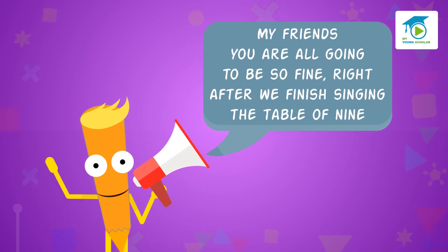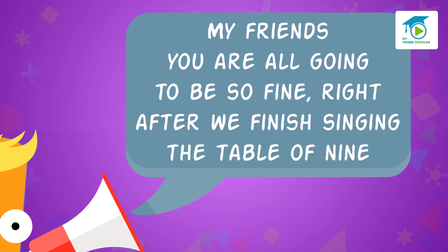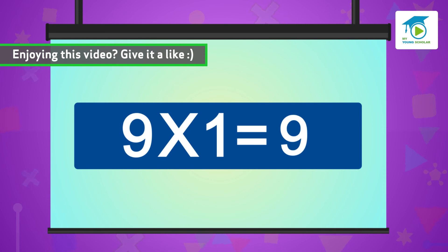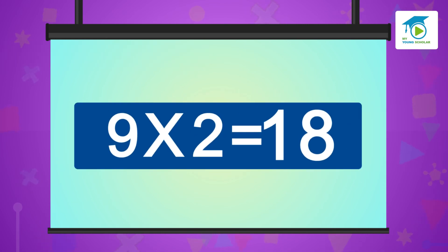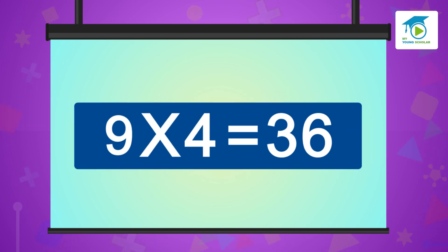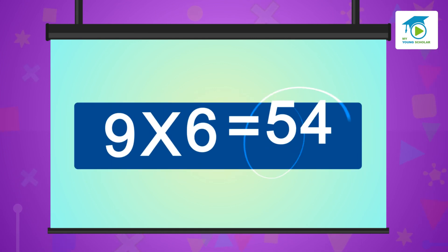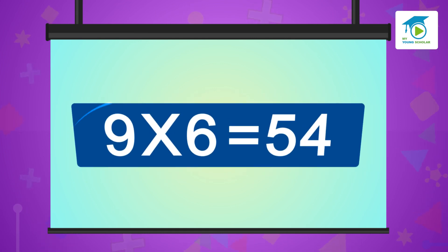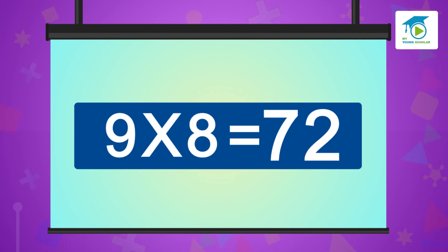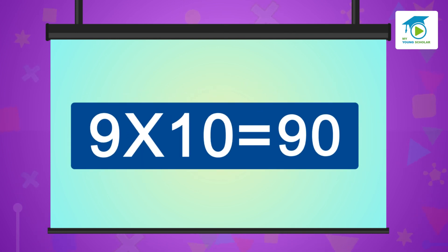My friends, you are all going to be so fine, right after we finish singing the table of nine. Nine ones are nine, nine twos are 18, nine threes are 27, nine fours are 36, nine fives are 45, nine sixes are 54, nine sevens are 63, nine eights are 72, nine nines are 81, nine tens are 90.